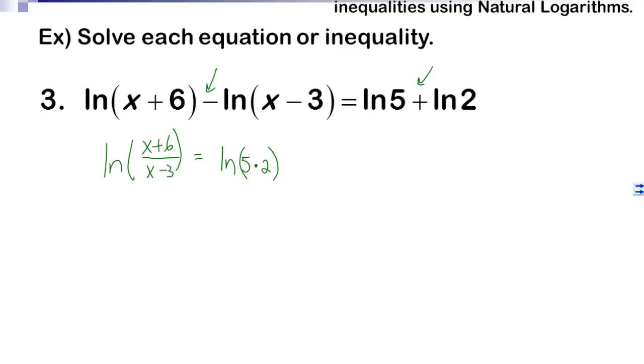Now remember the property that states that if I have two logarithms that have the same base, that means that the insides can be put equal to each other. These are logarithms with the same base. The base happens to be e. So I'm going to take the inside and put it equal to one another.